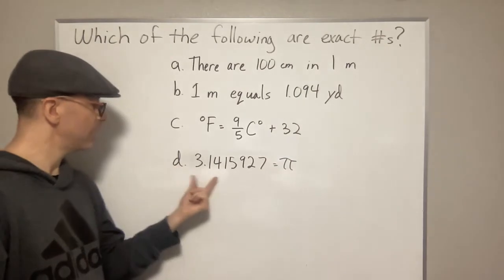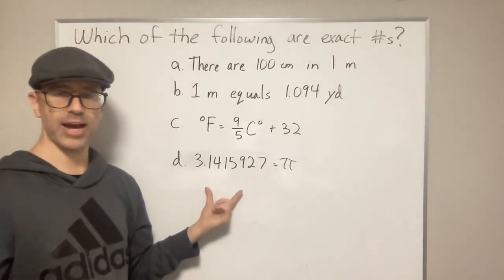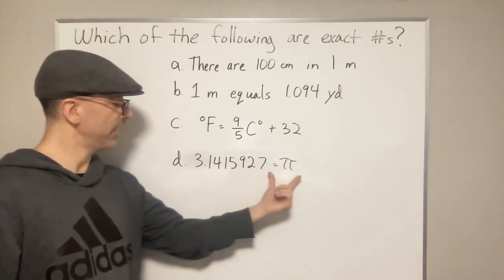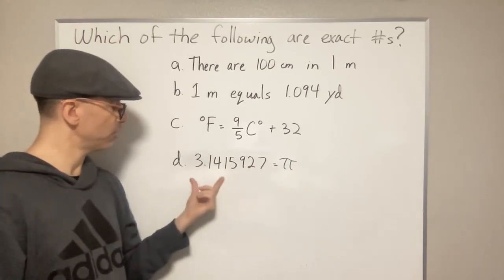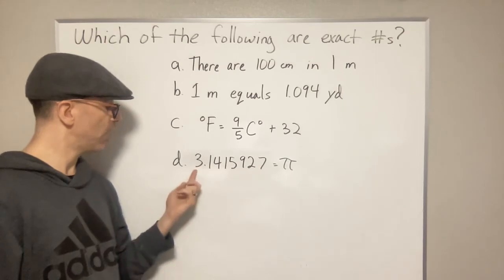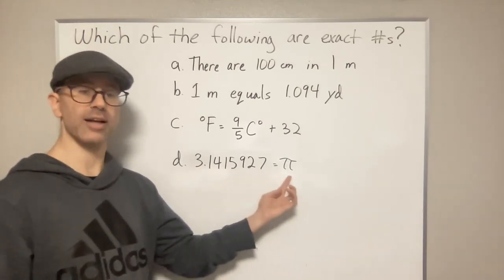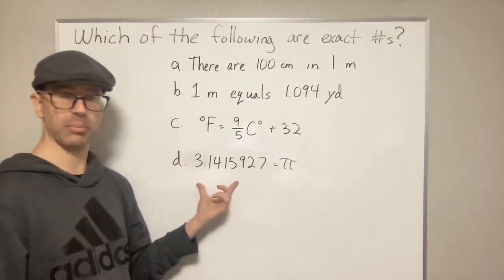And then finally, D, we have pi is equal to this number here. Is that exact or not exact? Well, anyone who's familiar, pi knows that this is an irrational number. Remember, this goes on forever. So 3.1415927 goes on and on and on. So this is not an exact number.